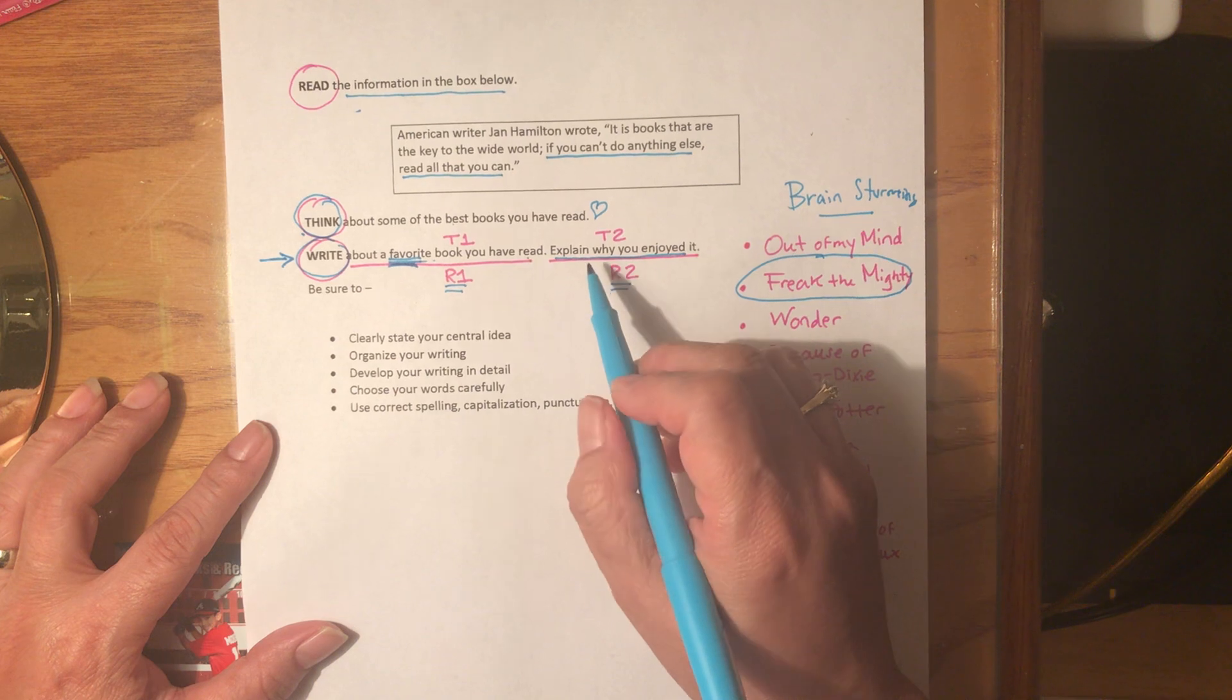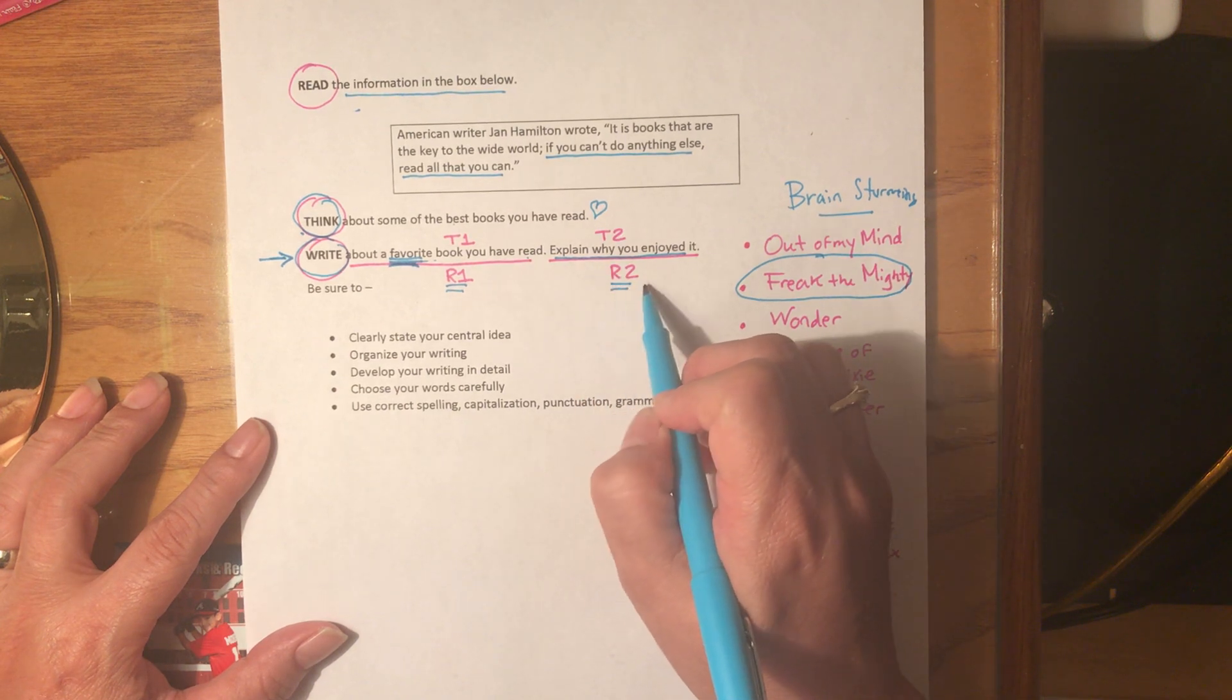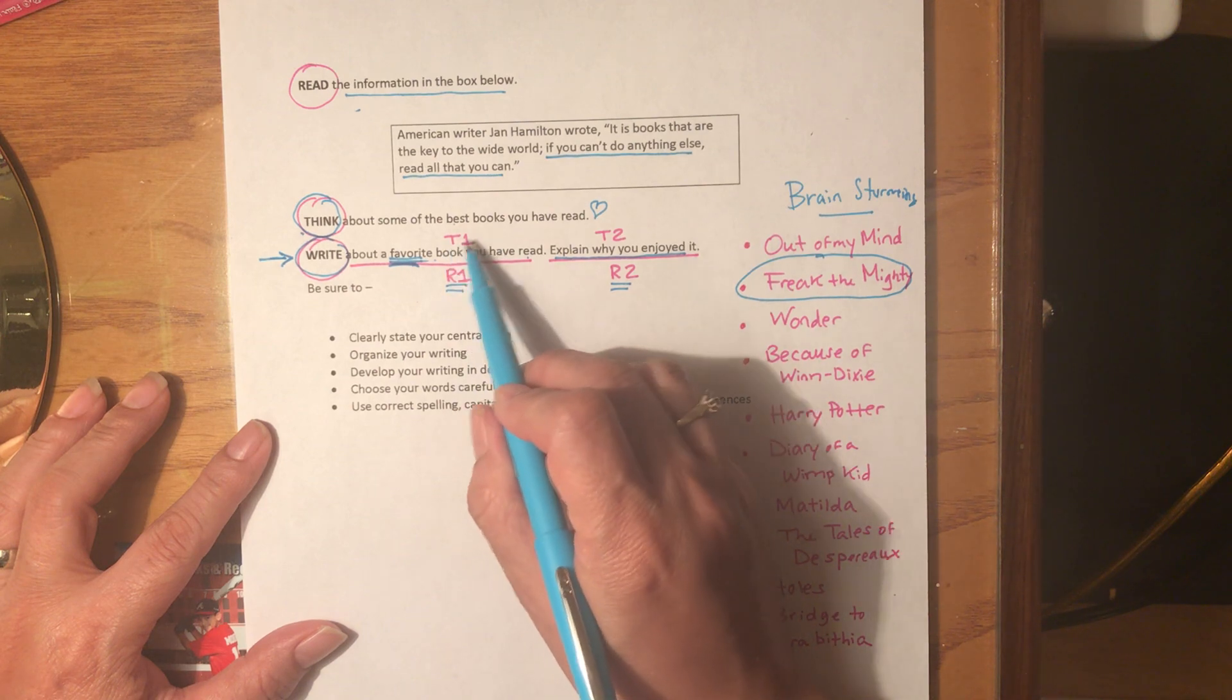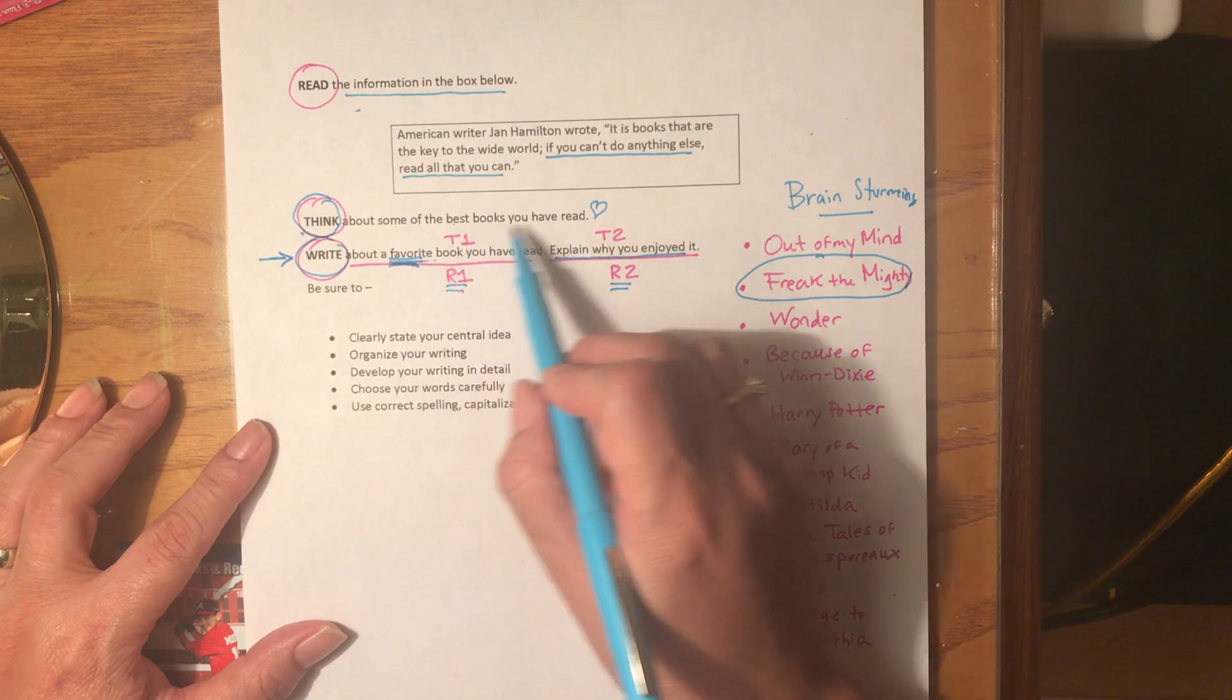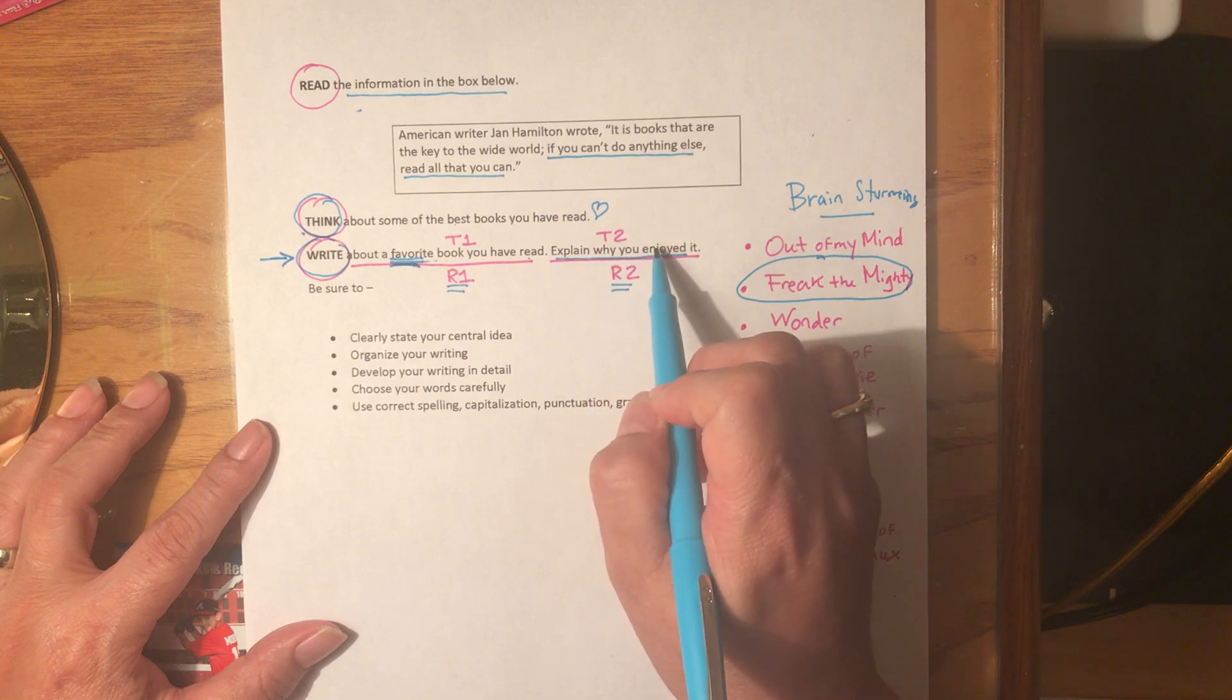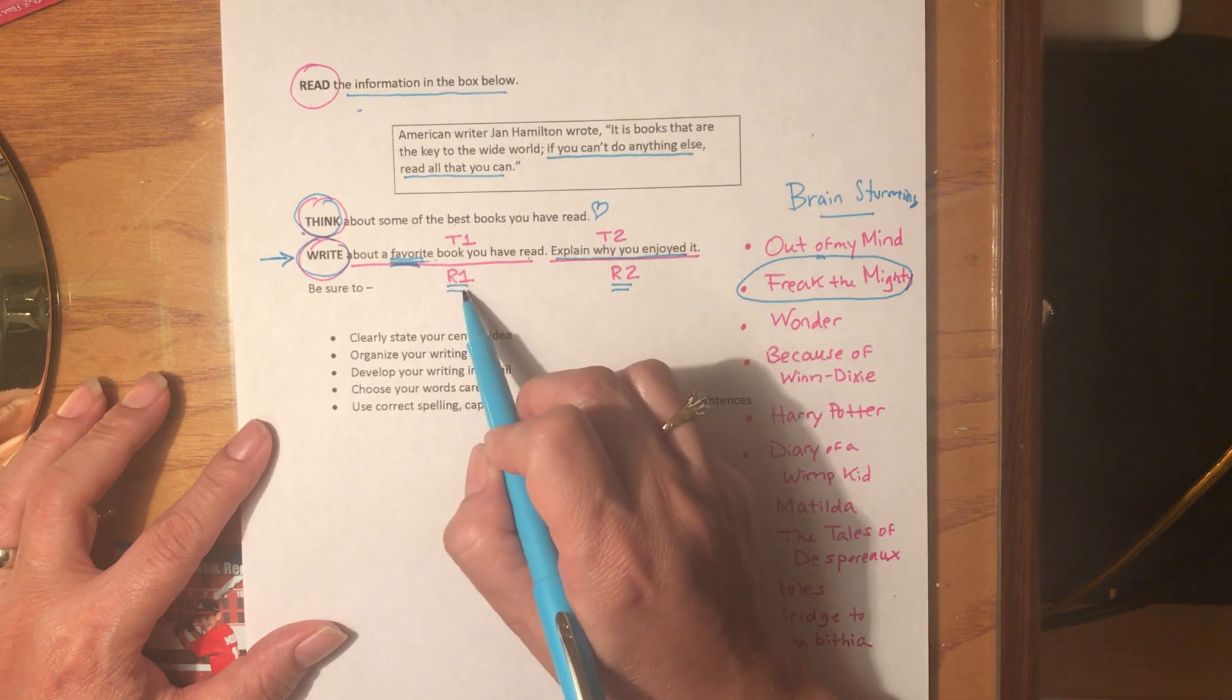So there's one of two choices. Topic One: tell me about the book like a BME, and then the next paragraph would be explain why you enjoyed it. Or Reason One and Reason Two: two separate reasons why you enjoyed the book.